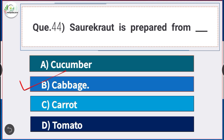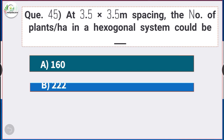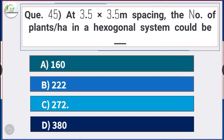Question number 45: At 3.5 × 3.5 meter spacing, the number of plants per hectare in a hexagonal system could be — answer option C — 272. At 3.5 × 3.5 meter spacing, the number of plants per hectare in hexagonal system could be 272.